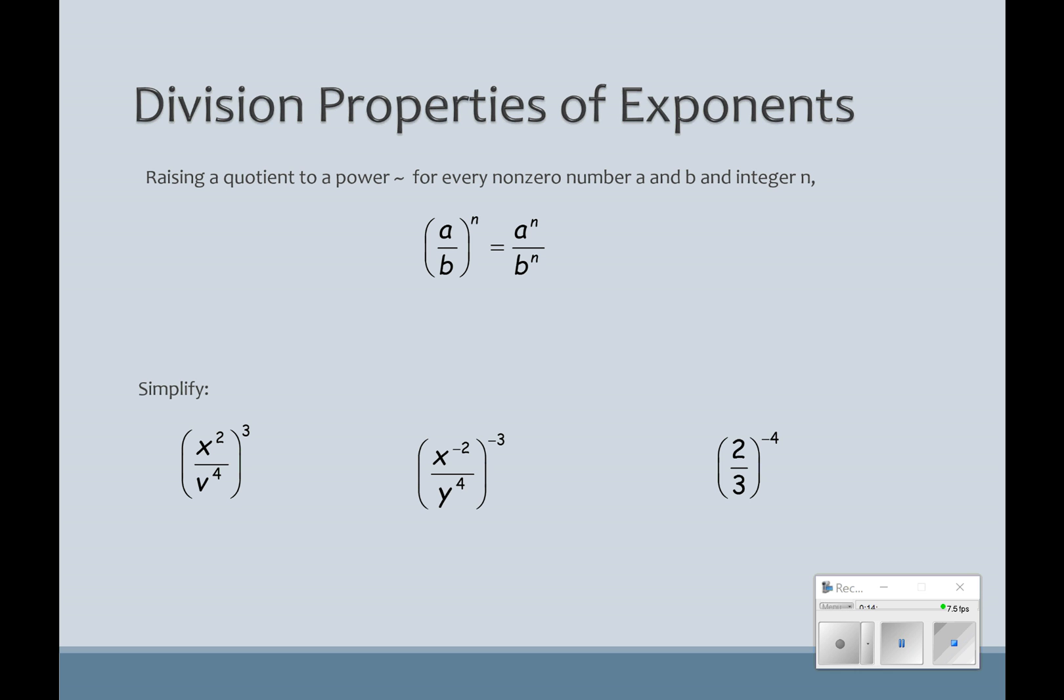Moving on. If I've got a quotient to a quotient, I've got to take everything, again, like we did with multiplication. This n goes to what's inside, and it goes both ways. So x squared to the 3rd becomes x, and when we take a power to a power, we multiply. So that becomes x to the 6th. V to the 4th to the 3rd, multiply. So we're going to get x to the 6th over v to the 12th. With this second example, if I multiply x to the negative 2 times negative 3 over y to the 4th times negative 3, it's going to give me x to the 6th, y to the negative 12th, and there's your brat brother again downstairs, so they're going to be sent to the room to be made positive. So my answer just becomes x to the 6th over y to the 12th.